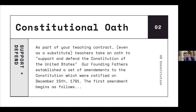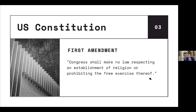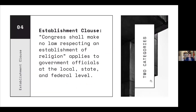Our founding fathers established a set of amendments to the Constitution, ratified on December 15th, 1791. The First Amendment begins: 'Congress shall make no law respecting an establishment of religion or prohibiting the free exercise thereof.' The Establishment Clause says Congress shall make no law respecting an establishment of religion, and this applies to government officials at the local, state, and federal level.